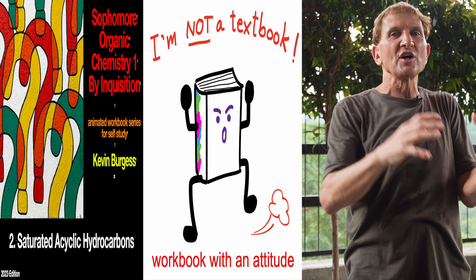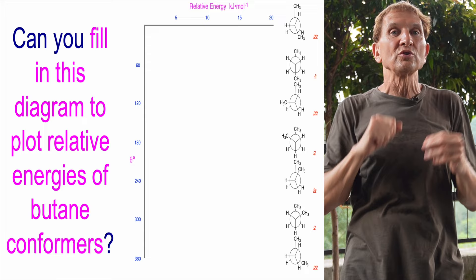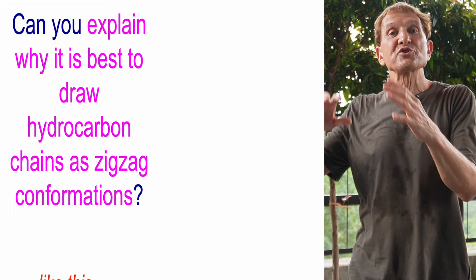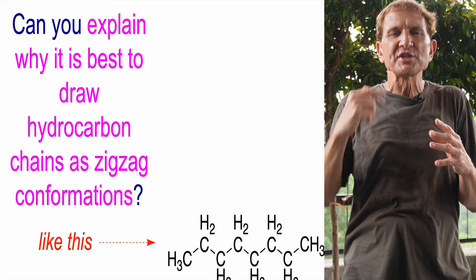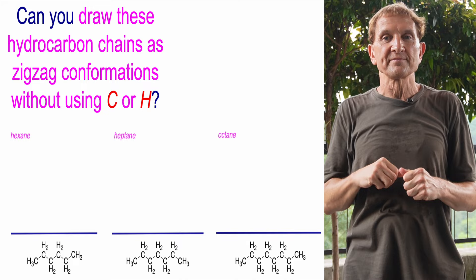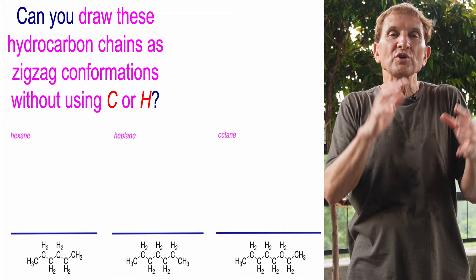It relates Newman projections to drawing zigzag organic structures, so students realize the connection between these two. It introduces common abbreviations for organic fragments — that's something that takes a bit of repetition to learn, and I come back to it in the third e-book in this series. There are also inset videos that the hard copy first edition of Sophomore Organic Chemistry One by Inquisition, which has been available for a couple of years, can't have.